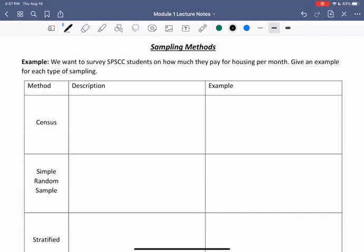So our first type of sampling method is a census. So in this method, we survey everyone in the population. So you might recall that every 10 years, the US government does a census where they collect data on everyone in the population. So in this example, we'd survey every SPSCC student.